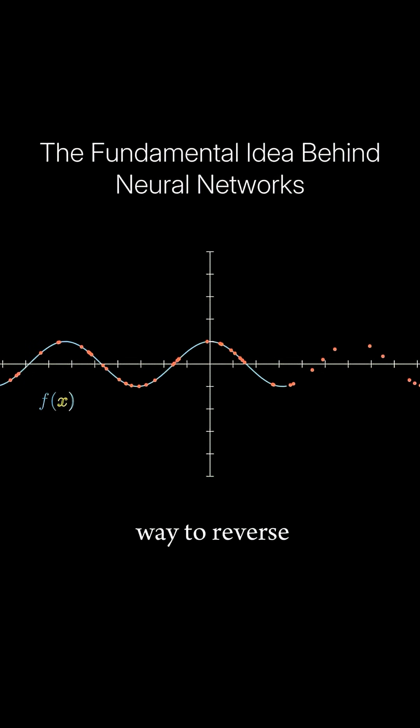Is there a way to reverse engineer that function that produced this data? If we could construct such a function we could use it to calculate a Y value given an X value that is not in our original data set.